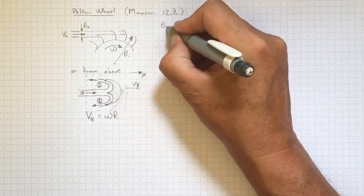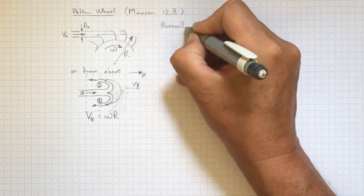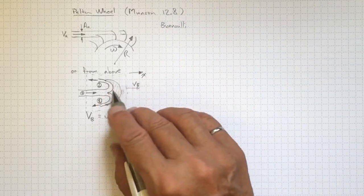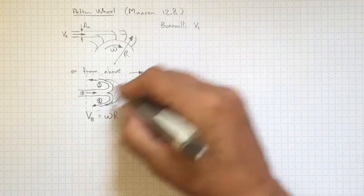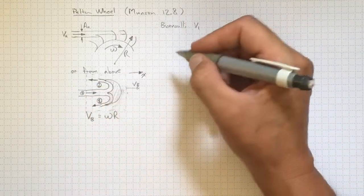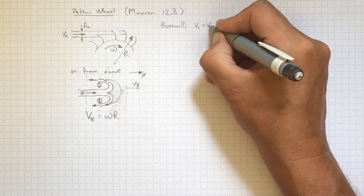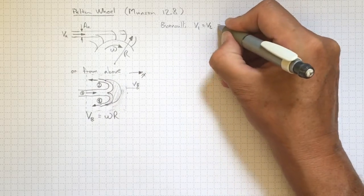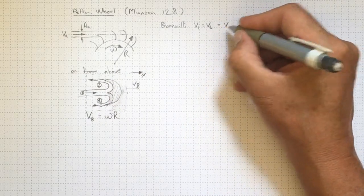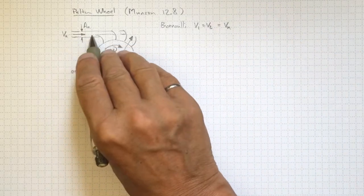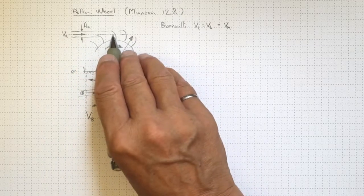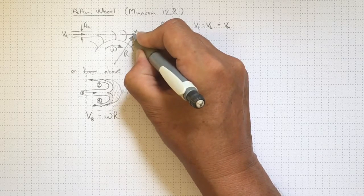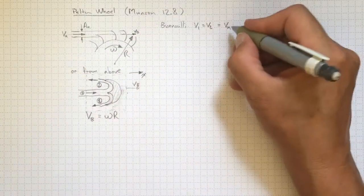Because the blade is stationary in the control volume, we can apply Bernoulli. There will be no losses because there's no work done on the blade, and we're going to neglect friction and gravity as usual. By Bernoulli, v1 coming in at atmospheric pressure is going to equal v2 going out at atmospheric pressure, and it's going to equal the nozzle velocity minus the blade velocity v_b — however quickly the blade is moving away from the nozzle.